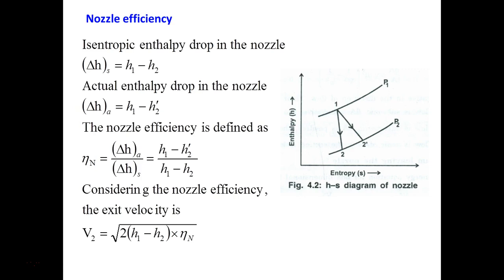We can minimize friction by smoothening and polishing the surface, but 100% elimination is not possible. Because of friction, there is a slight increase in the enthalpy of the steam. H₂ is the enthalpy at isentropic expansion outlet, and H₂' (H₂ dash) is the actual outlet enthalpy due to friction. The actual enthalpy drop is H₁ − H₂'. The ratio of actual to isentropic enthalpy drop is called nozzle efficiency.